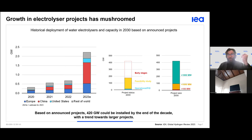Among OECD countries, electrolysis-based hydrogen development projects are progressing relatively quickly. In 2023, we also see that in addition to OECD countries, China has developed many new projects. Some projects have already reached the operational stage. Currently, China is leading in electrolysis-based hydrogen production.